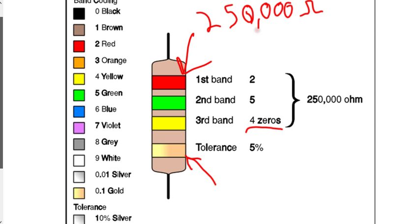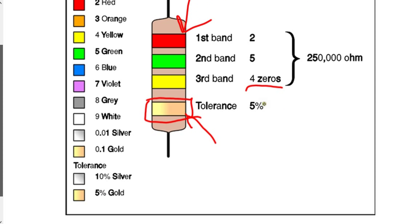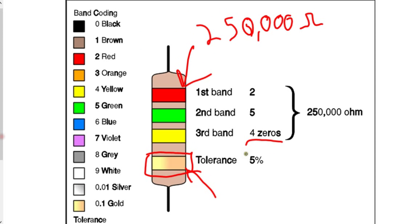be in ohms. And so this is a 250,000 ohm resistor. Now the last band here tells you the tolerance. In this case, if this is gold, that tells you it's going to be within 5%.